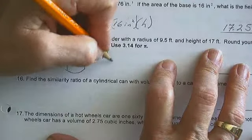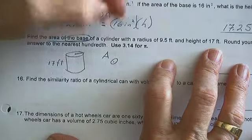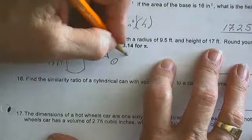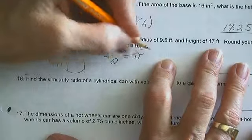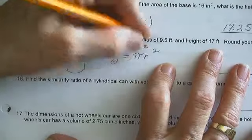The area of the circle, which is what our base is because it's a cylinder, is pi times the radius squared.